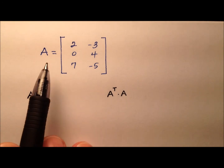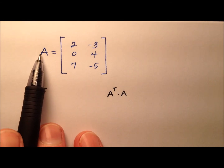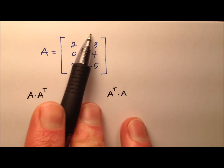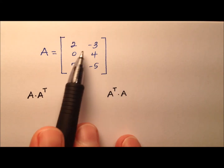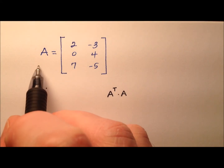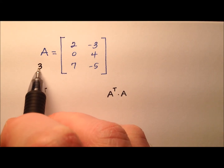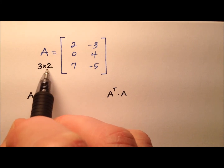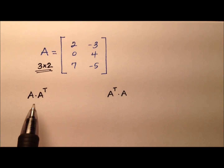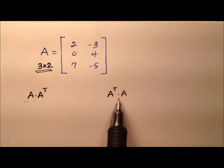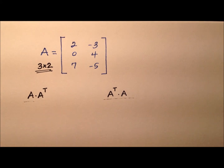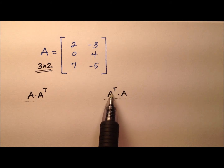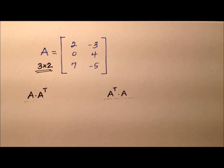In this example, we're given a matrix definition. So we have A is this matrix. The dimensions here are three rows and two columns, so A is going to be a three by two matrix. We would like to evaluate a couple of expressions: matrix A times the transpose of A, and then the reverse — the transpose of A times matrix A.